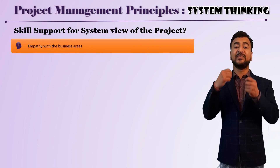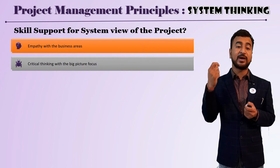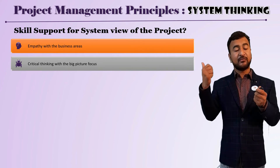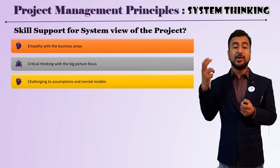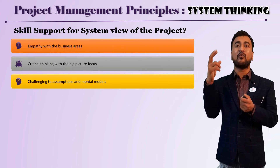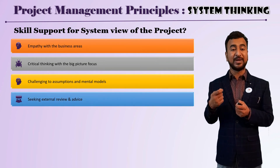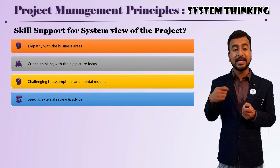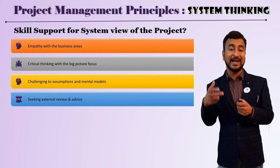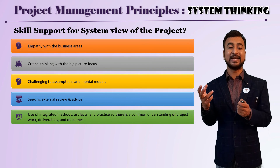What supports the system view of the project? First, empathy with business areas. Second, critical thinking with a bigger-picture focus. You also have to challenge assertions and mental models — sometimes we have a prejudiced mindset, so you need to challenge that when adopting this principle. Look at external and internal critiques and get a 360-degree review.